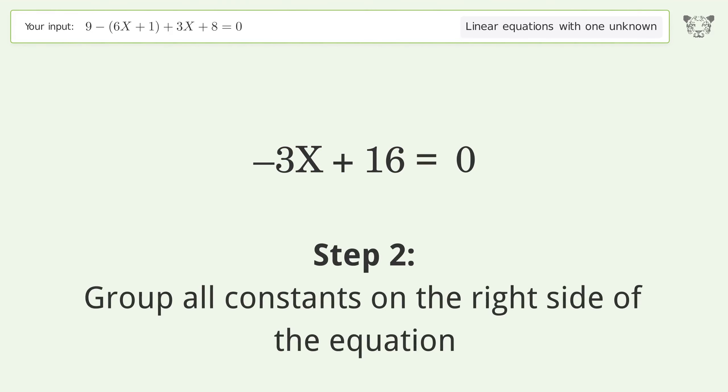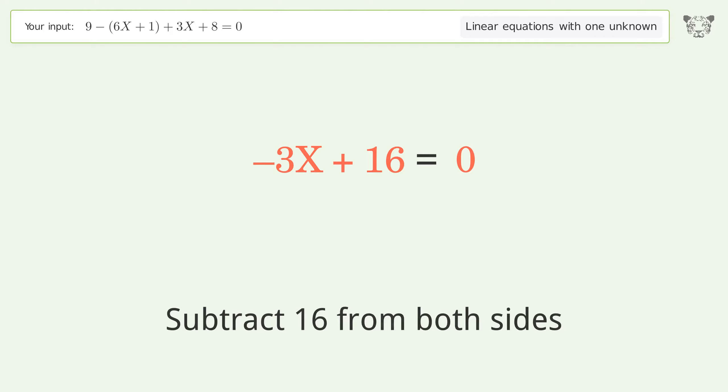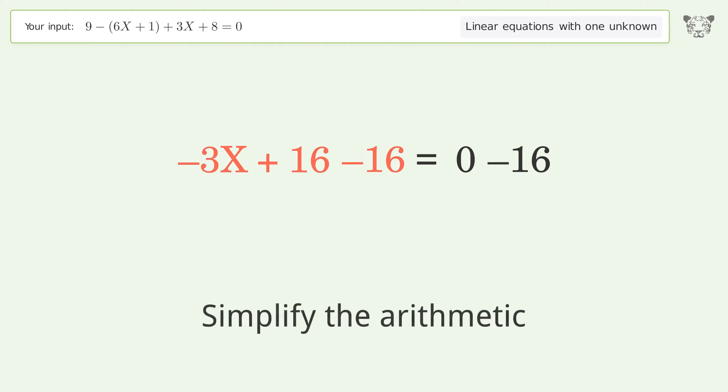Group all constants on the right side of the equation. Subtract 16 from both sides. Simplify the arithmetic.